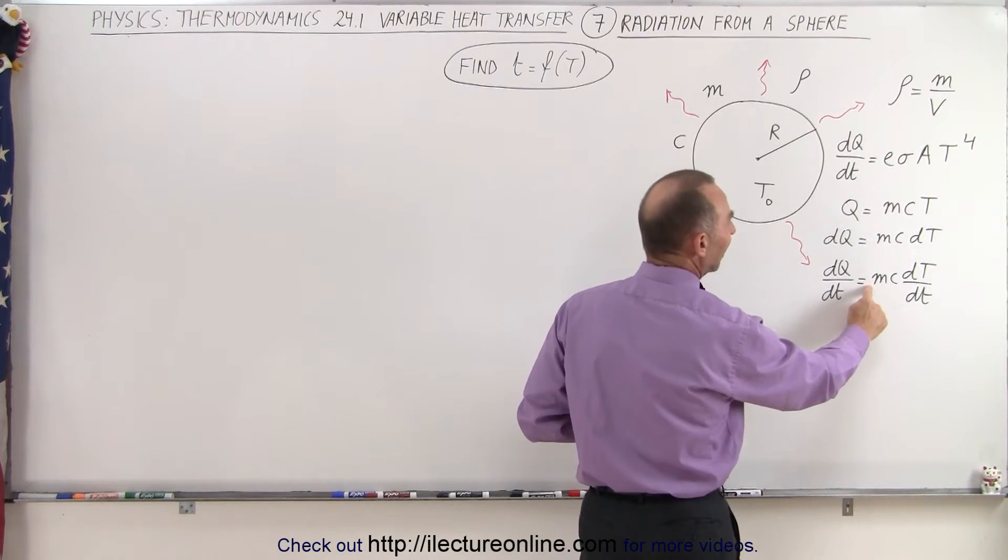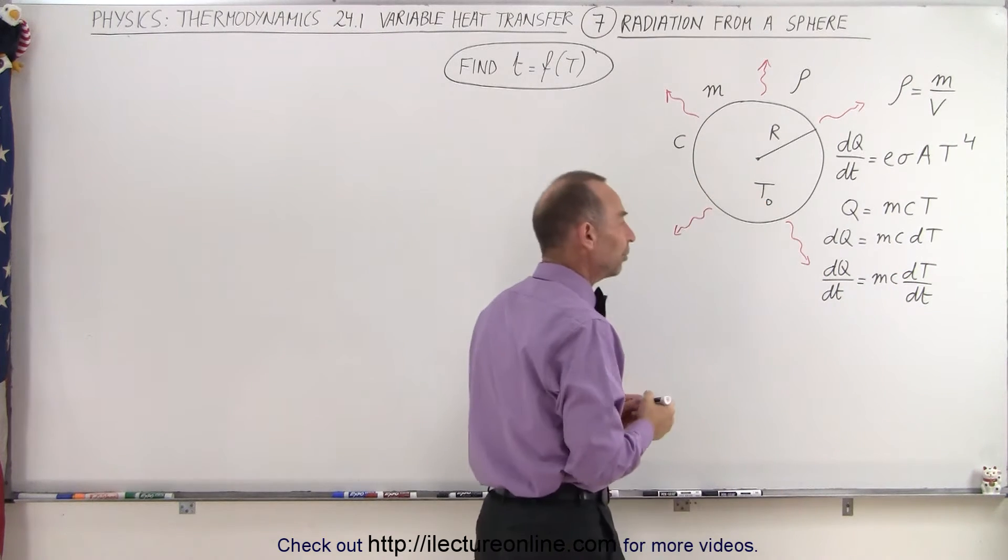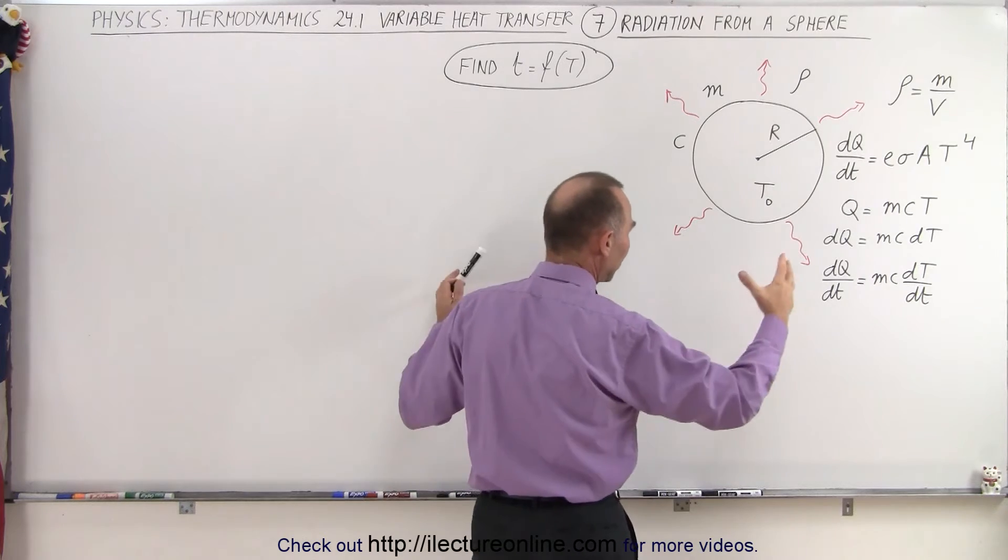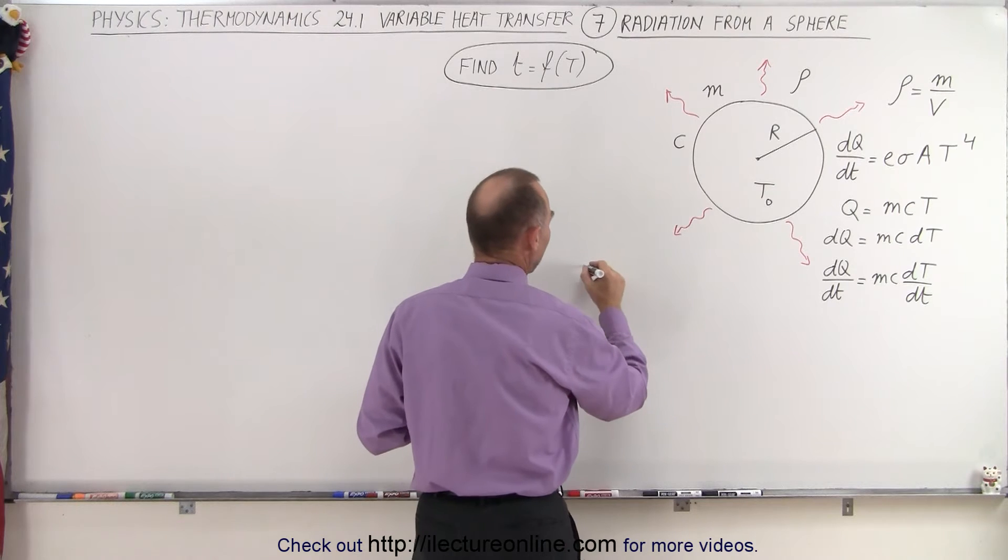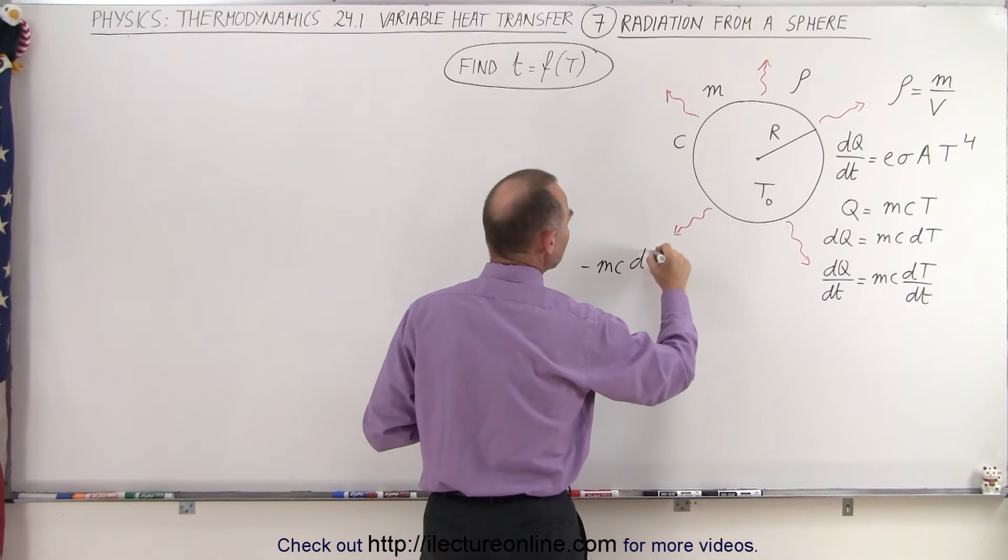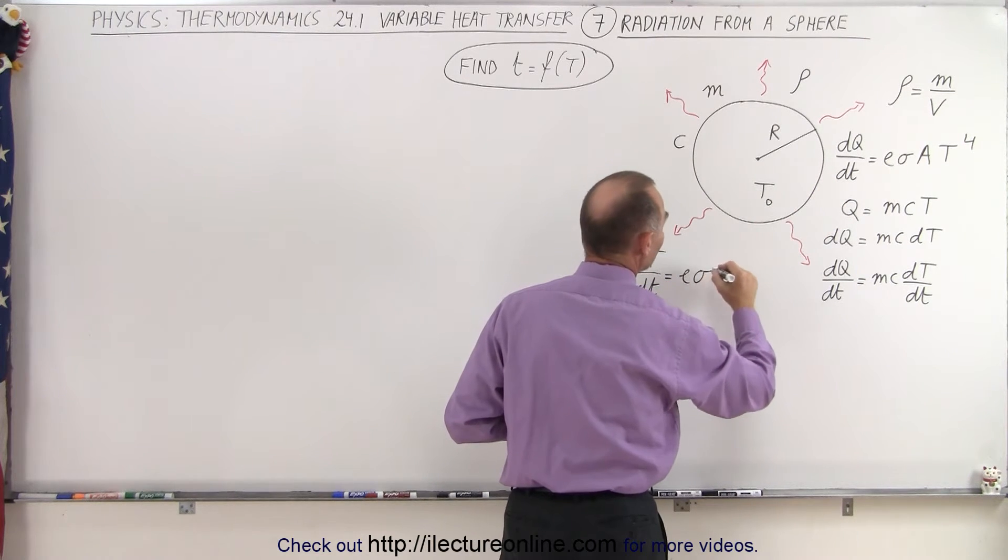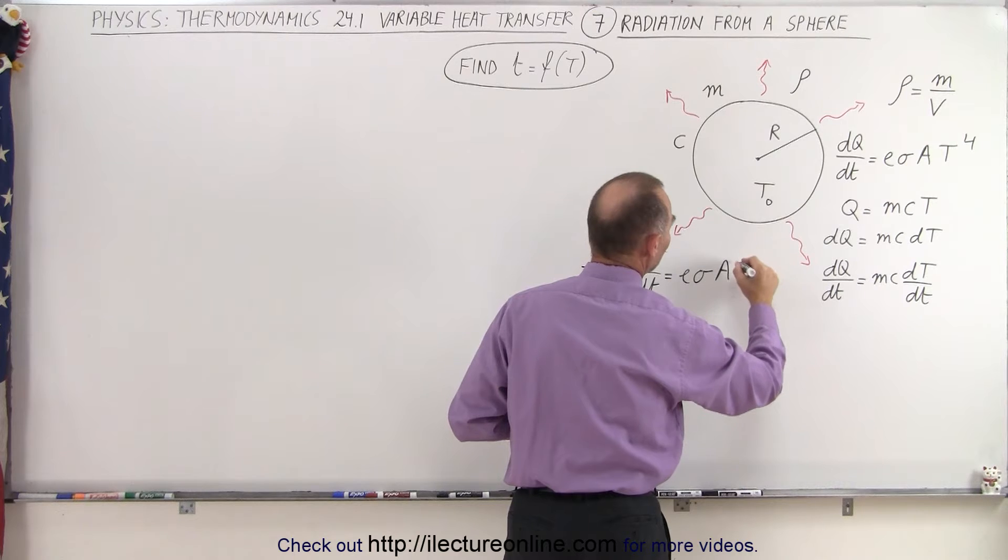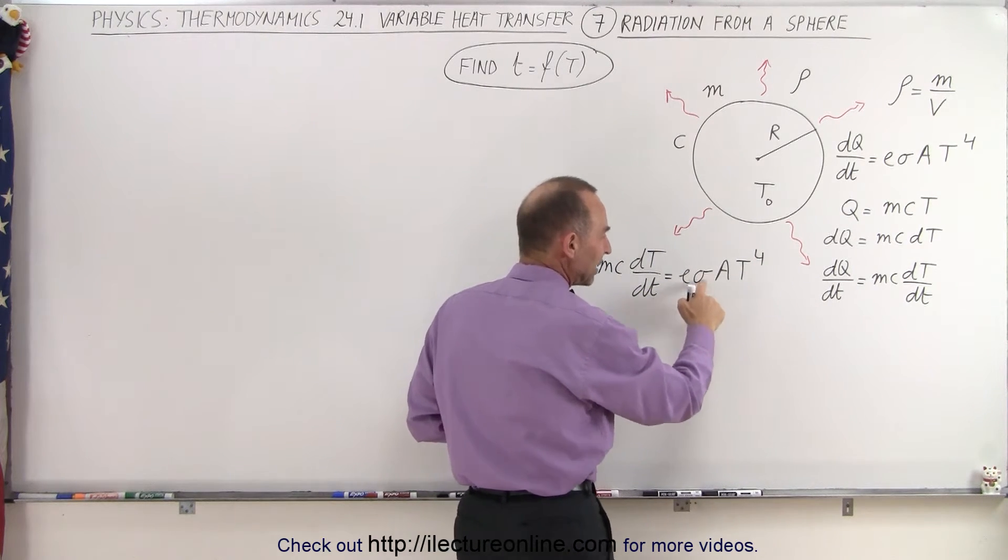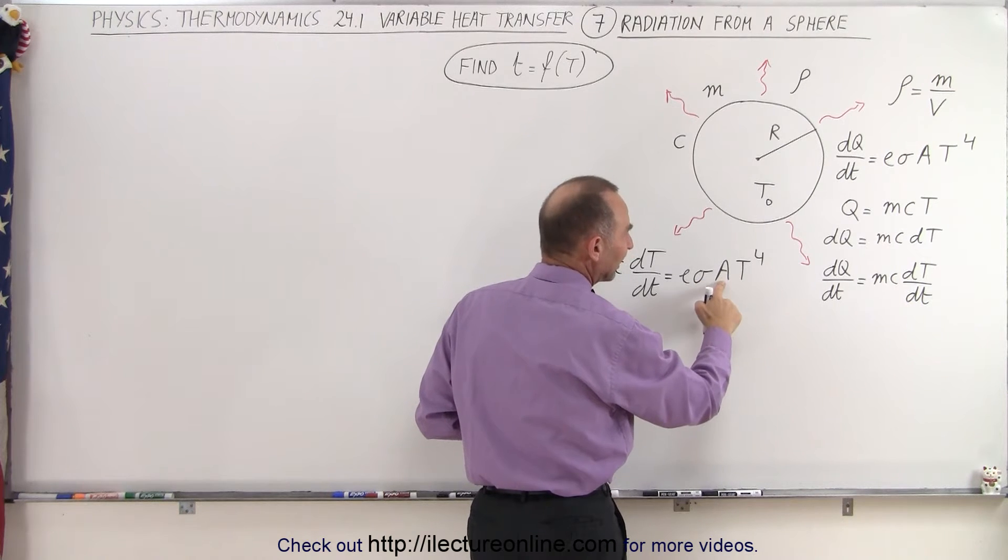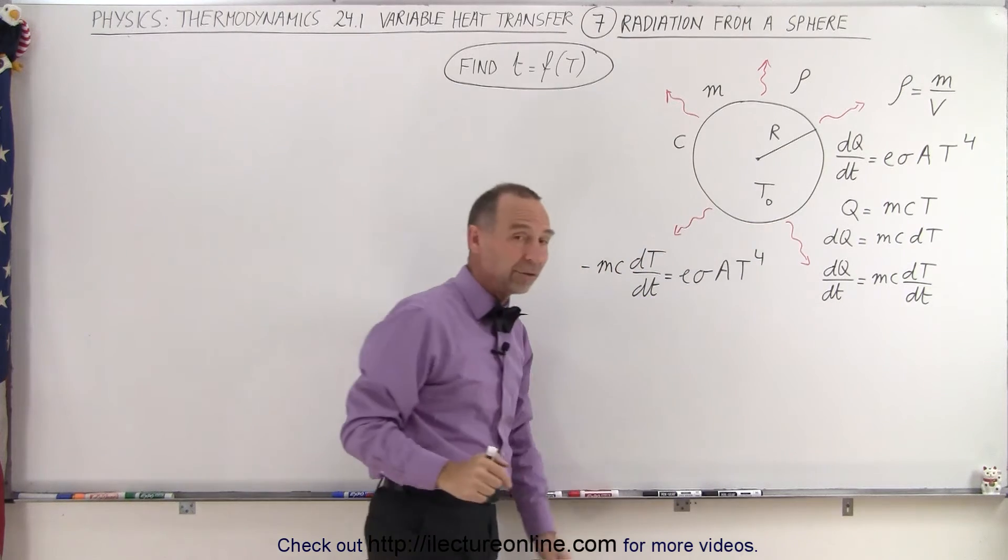Also we're going to need to put a negative sign in here because as it's radiating out heat it's going to be a decline in the temperature. So the amount of heat radiated is going to result in a drop in the temperature here. So we can say that minus MC dT/dt is going to be equal to E sigma A times T to the fourth power. Of course that's the emissivity constant which we'll take to be one. That's the Stefan-Boltzmann constant. This here is the area of the surface and that's the temperature of the object raised to the fourth power.